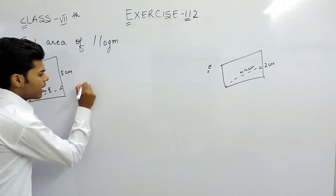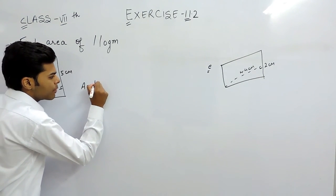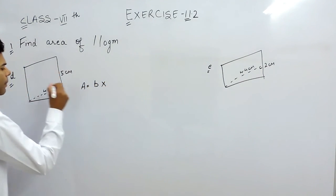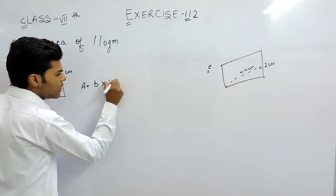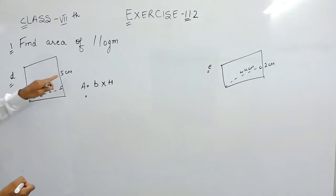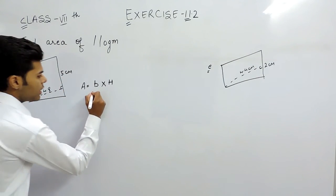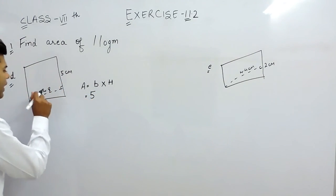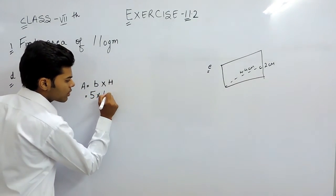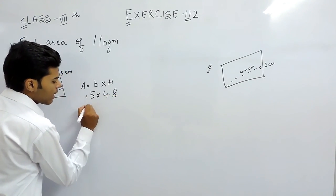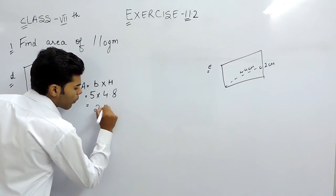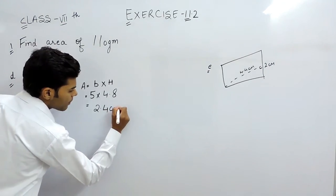As I told you, area of the parallelogram is equal to base multiplied by the height, means the corresponding height. So in this question, the base we will take is 5 cm, so the corresponding height is 4.8, so multiplied with 4.8 and that will give us 2.4 cm².